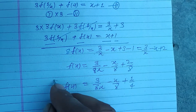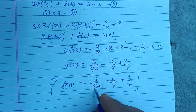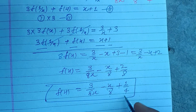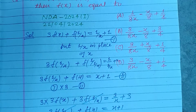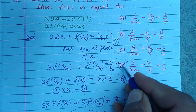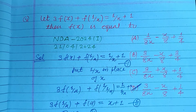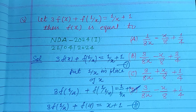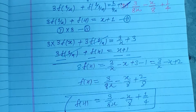Therefore f(x) = 3/(8x) - x/8 + 1/4. The answer to this question is option D. I hope you got it. Please like the video, subscribe to the channel. Thanks for watching.